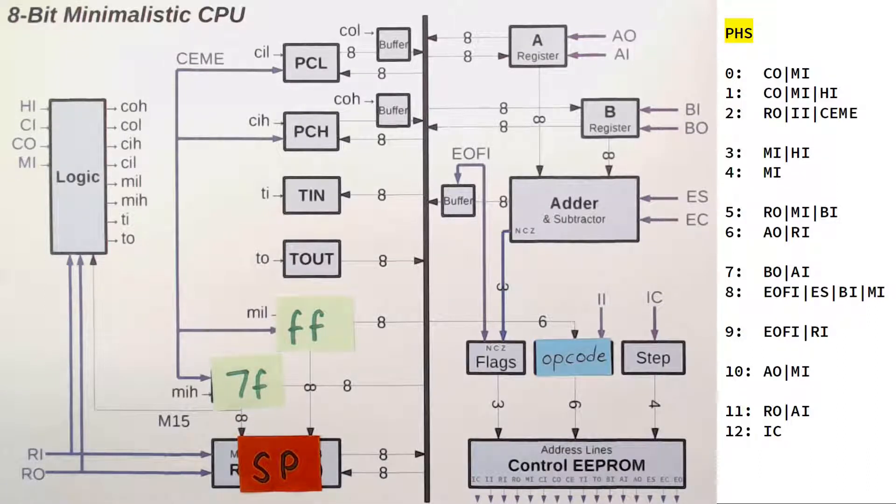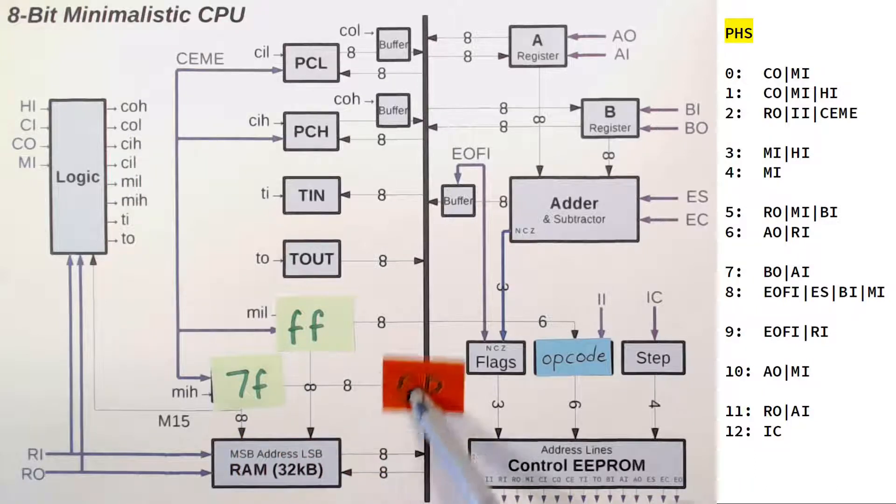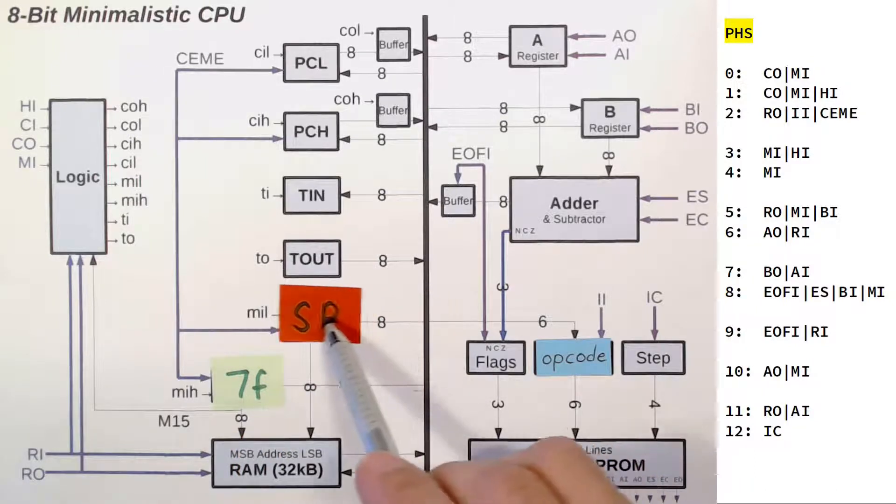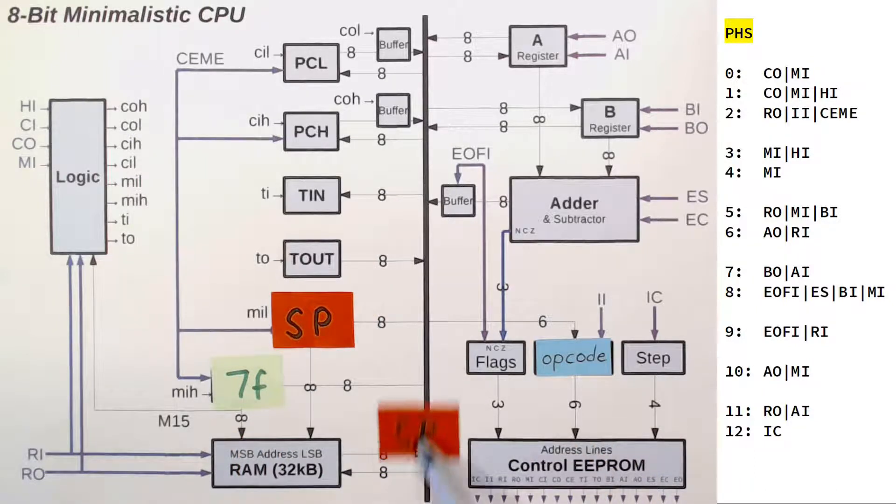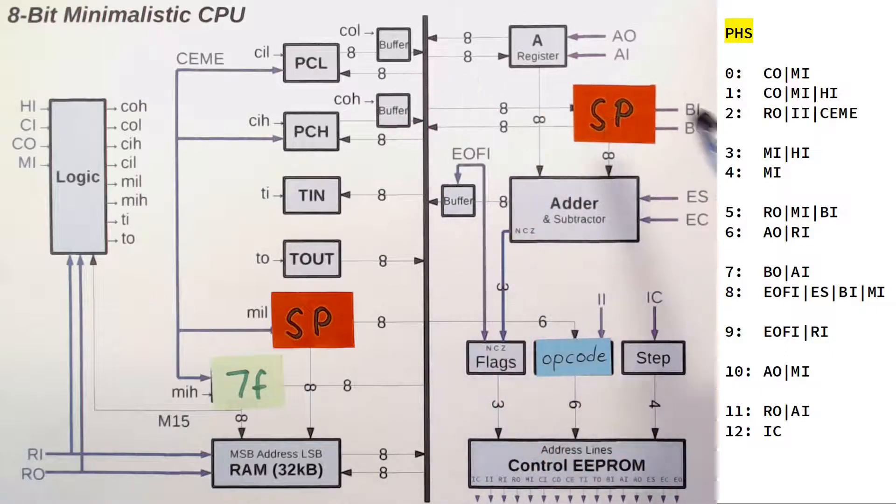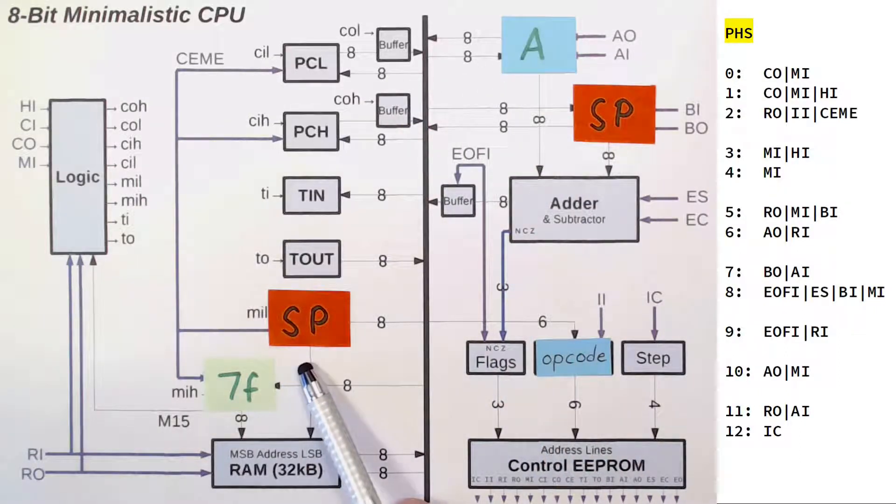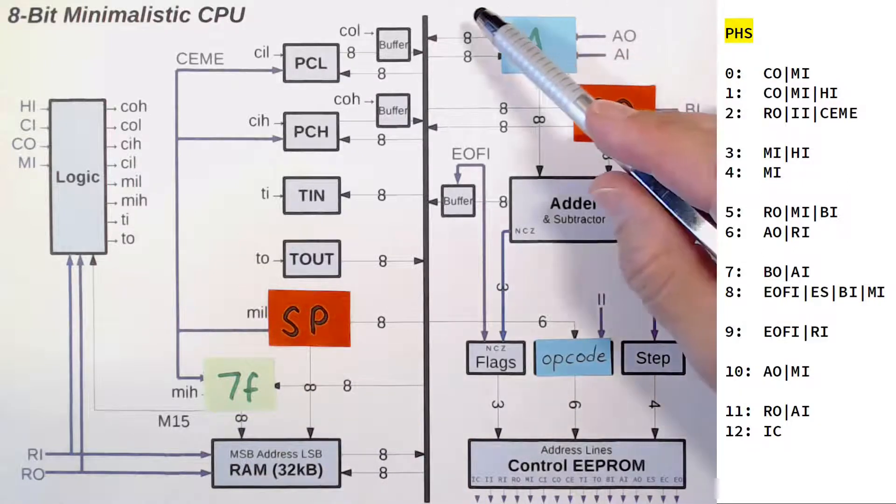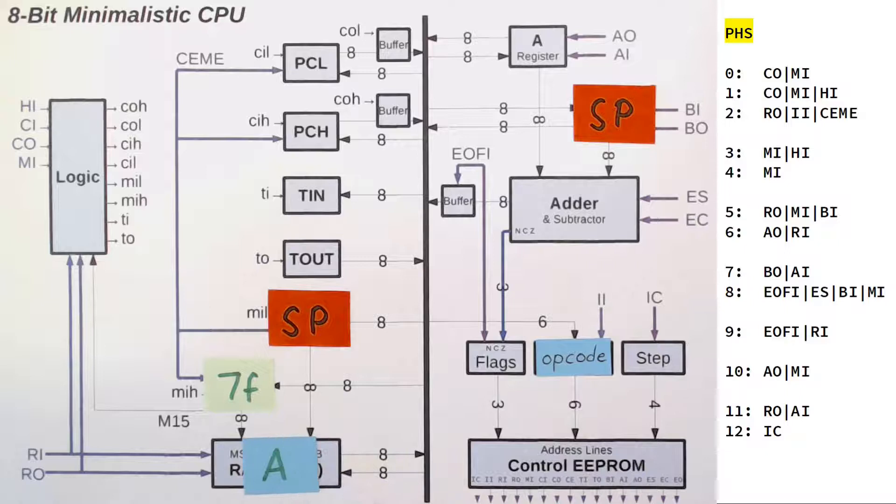RAM out memory in BIN reads out that stack pointer and moves it into the MAR and also into the B register. Now the MAR points to the free top of the stack, to which we write A by using A out RAM in.